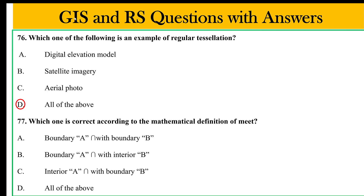A boundary is an intersection with boundary B. B boundary is an intersection with B. C is the intersection with B. This is a standard of intersection with B. This is a common bound direction.